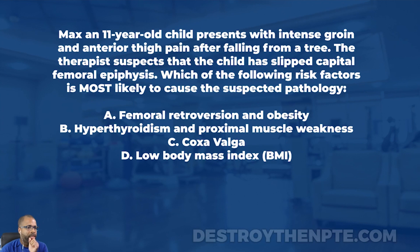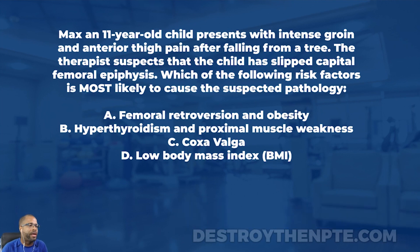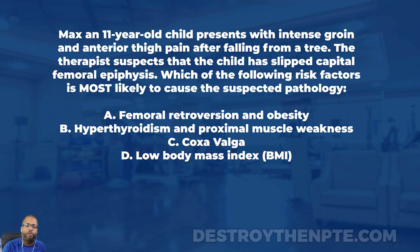For this week's clinical file we have Max, an 11-year-old child who presents with intense groin and anterior thigh pain after falling from a tree. The therapist suspects the child has slipped capital femoral epiphysis. Which of the following risk factors is most likely to cause the suspected pathology? Answer A is femoral retroversion and obesity, B is hyperthyroidism and proximal muscle weakness, C is coxa valga, and D is low body mass index.